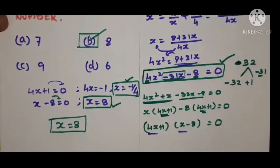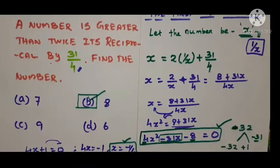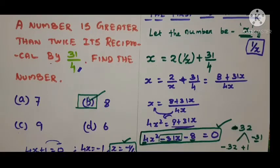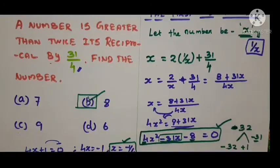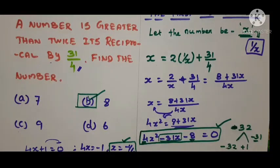Once again, reading the question and answer: a number is greater than twice its reciprocal by 31/4. Find the number. The answer is option B — 8 is the particular number. Hope you understand how we found the answer. Thank you for watching. This is the First Step Academy Learn and Grow Education Medium.